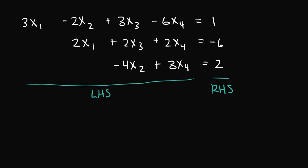Whenever we try to write a system of linear equations into a matrix, we want to look at how many equations there are and how many unknown variables there are — that's what's going to tell us how big our matrix is going to be. In this system of linear equations, we have three equations: equation one, equation two, and equation three. The number of equations tells us how many rows our matrix has to have, so three equations means there's going to be three rows.